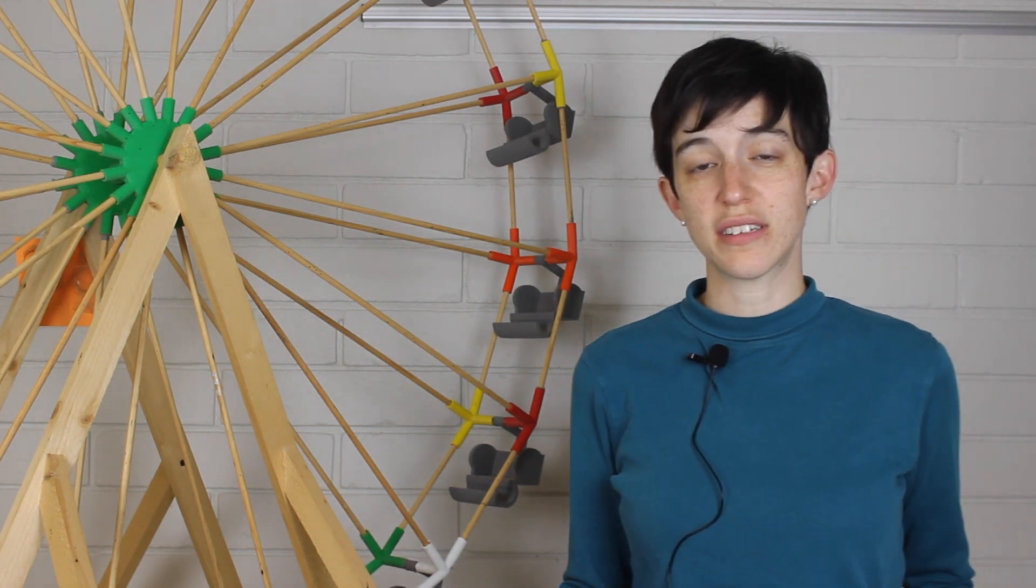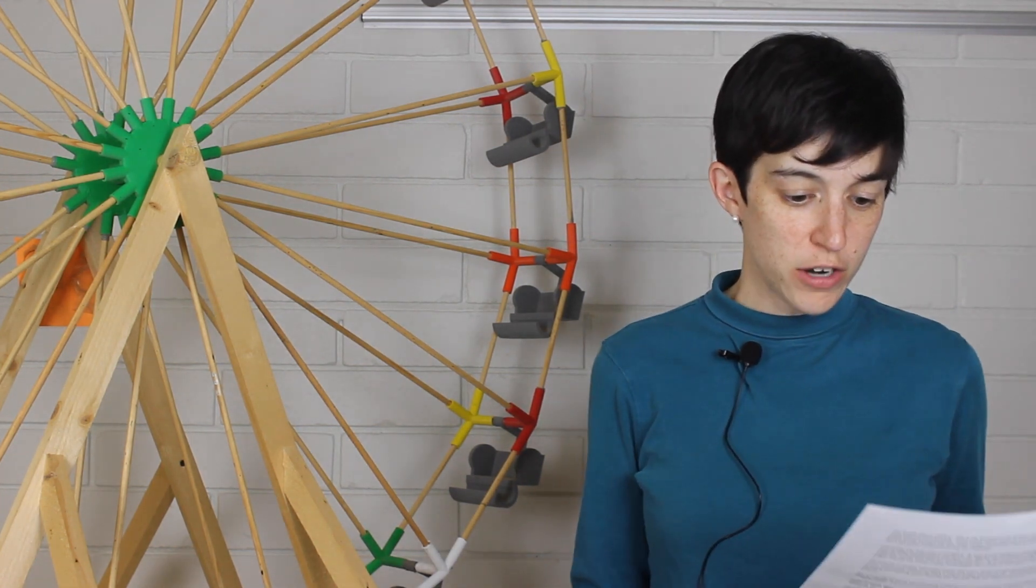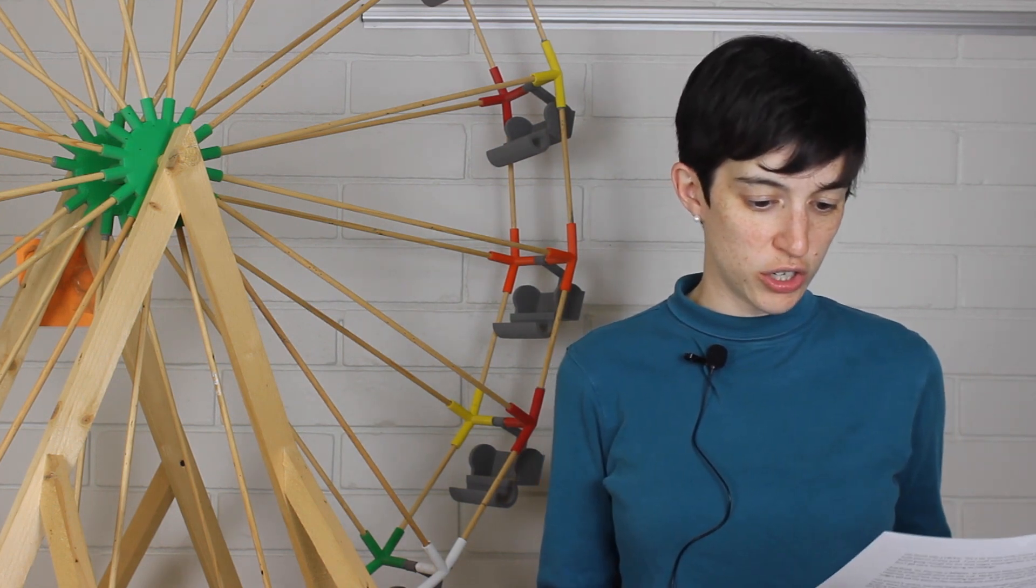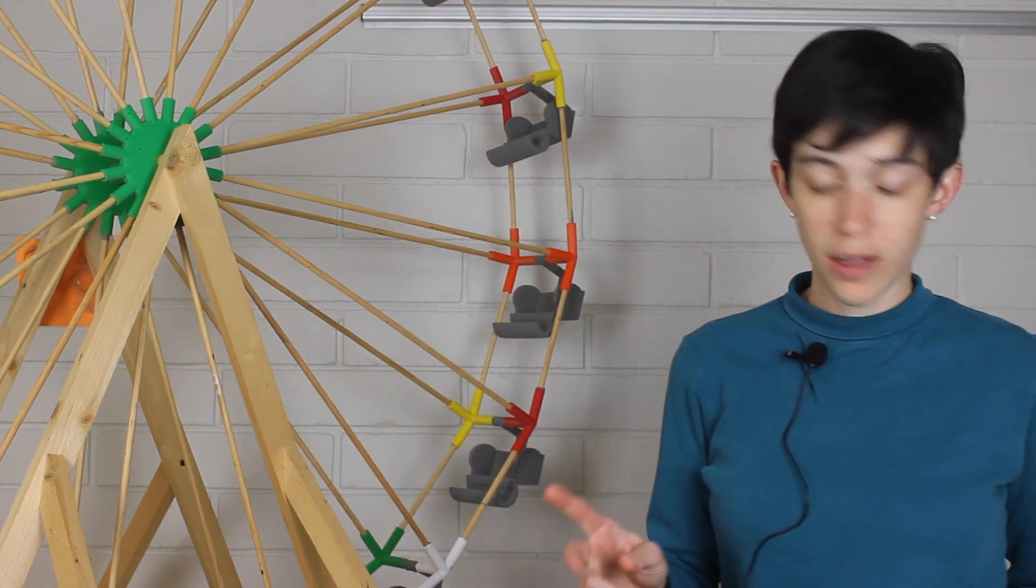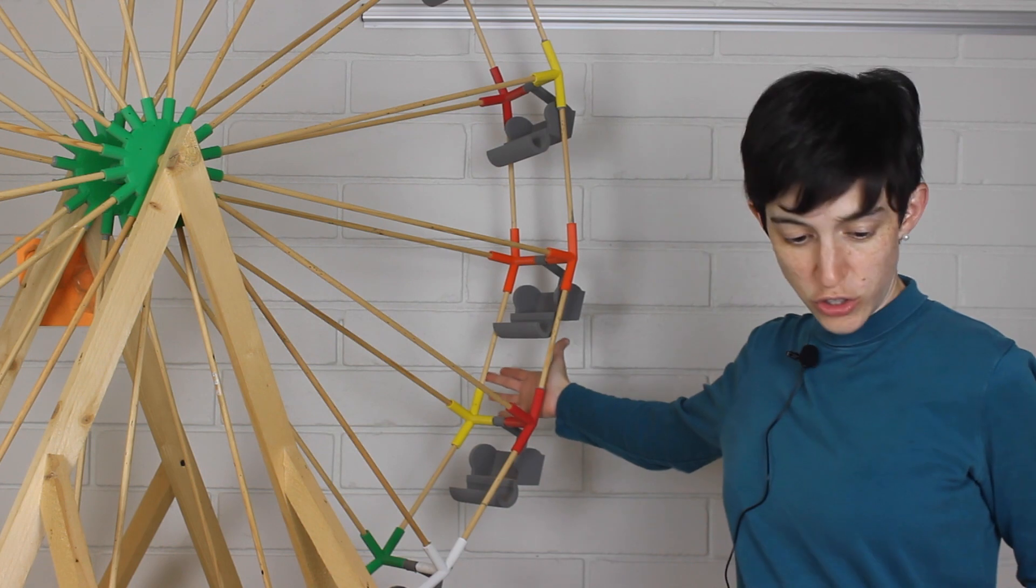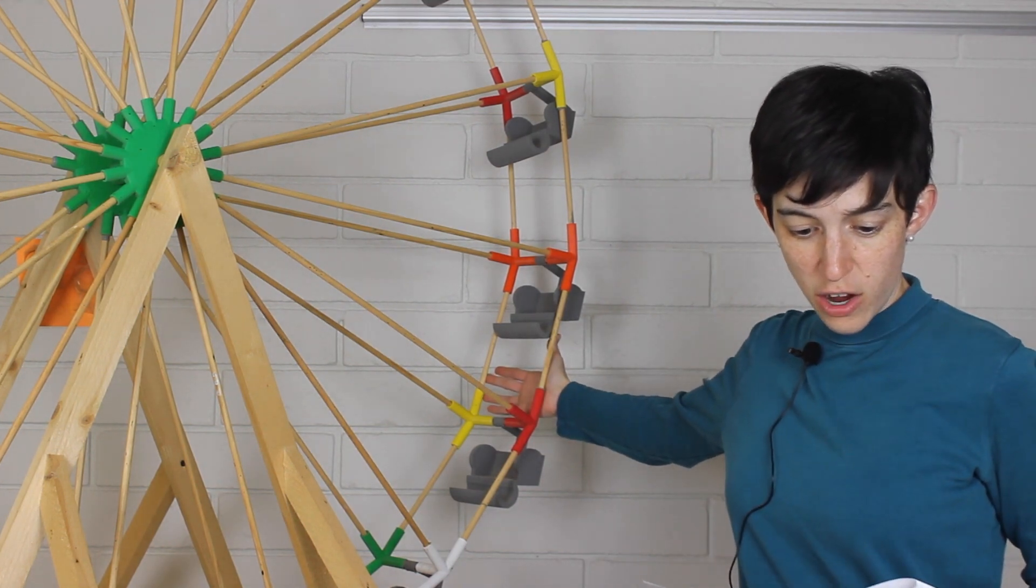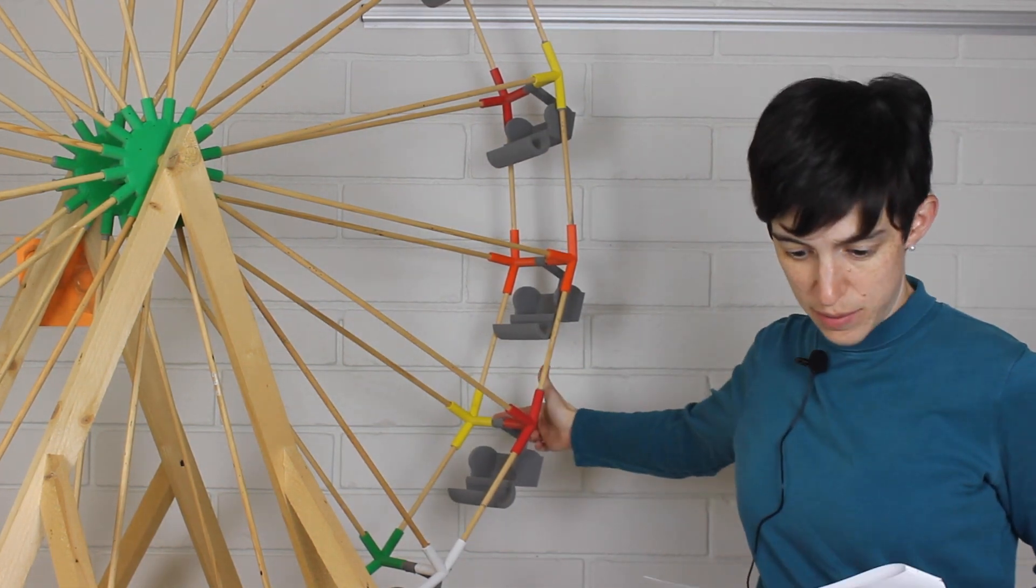Many Ferris wheels take their inspiration from spider webs. Ferris wheels use a cobweb structure that is actually two in one. The two wheels, one and two, equal in size, are attached at the outer rim by horizontal beams.